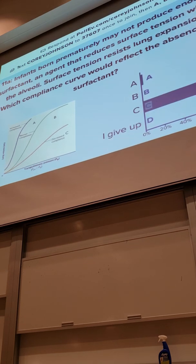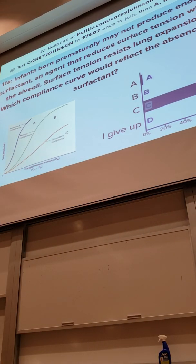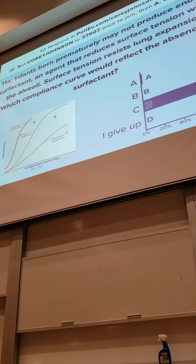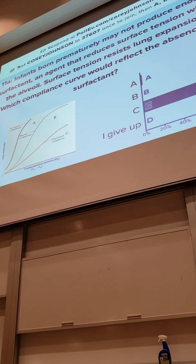Why do we have decreased compliance if there's no surfactant? Surface tension is going to work against expansion, so surface tension gives you decreased compliance. And what brings that orange line up to normal is surfactant — surfactant helps to make the normal curve, the green line here, present.